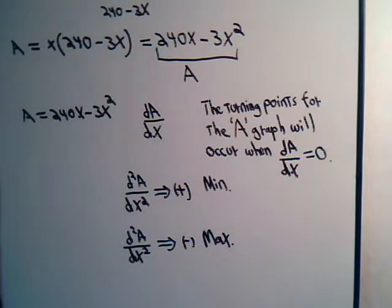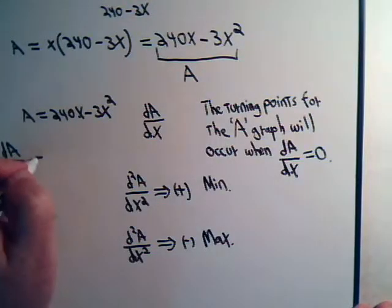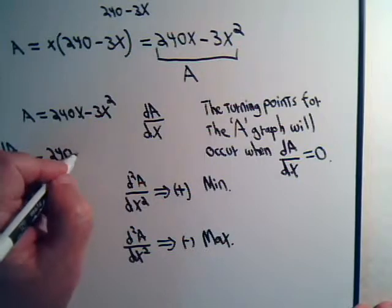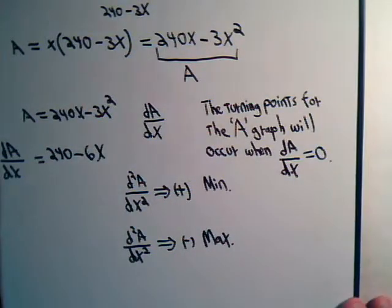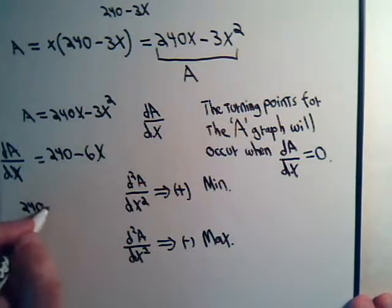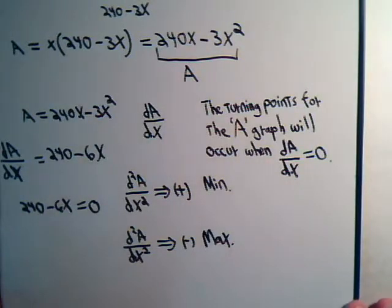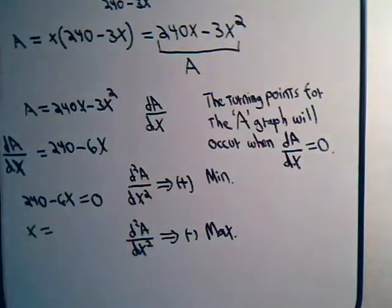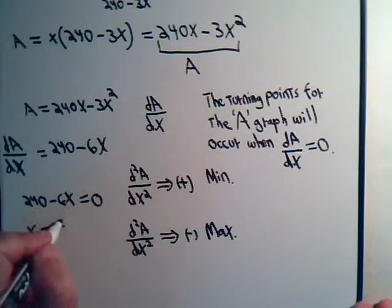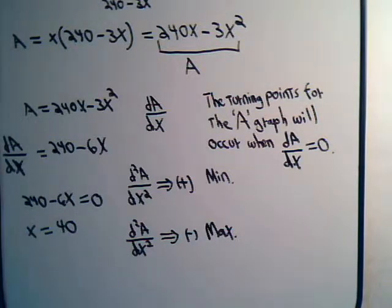So, we know all of this, and it looks like this is A, so let's find dA/dx. dA/dx will equal 240 minus 6 times x. And, we know at the turning point, that equals zero. So, 240 minus 6x equals 0. So, x is just going to be equal to the value of 40. So, there's our turning point. There's only one of them.